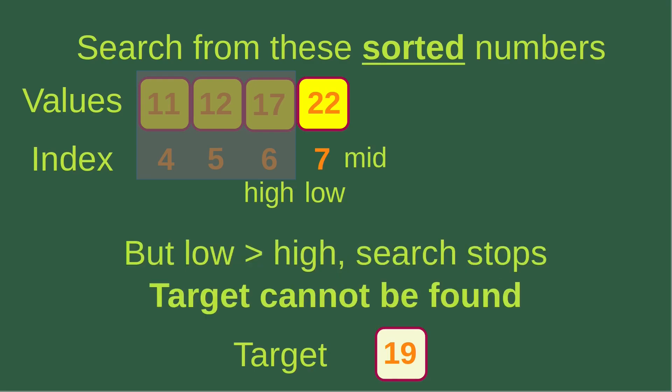Now we can see that the low index is larger than the high index — the low index is 7 while the high index is 6. In this case, we can be sure that the target doesn't exist in our given numbers, so the search has to stop. The target cannot be found from these numbers, meaning 19 is not present in our given array.